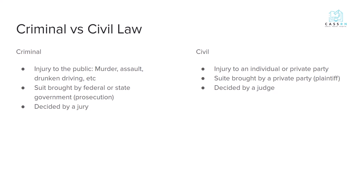It's important to understand that there is a difference between criminal intent and civil intent when it comes to law. Criminal law involves an action where there was an injury to the public — things like murder, assault, or drunk driving. That suit is usually brought by the government, either federal or state, which is known as the prosecution, and the results are usually decided by a jury. In civil law, it's a little different because this is an injury to a private party. That suit is brought by the private party, also called the plaintiff, and is usually decided by a judge.